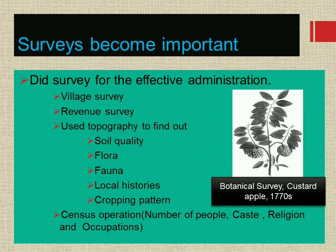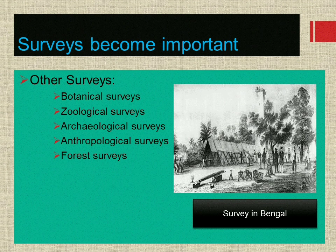Surveys became important. The British conducted surveys for effective administration — village surveys, revenue surveys, topography to find out soil quality, flora, fauna, local histories and cropping patterns. Census operations were done to identify the number of people, caste, religion and occupations. The botanical survey was done in the 1770s. Other surveys included botanical, zoological, archaeological, anthropological and forest surveys. This picture shows a survey in Bengal.